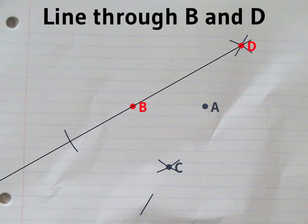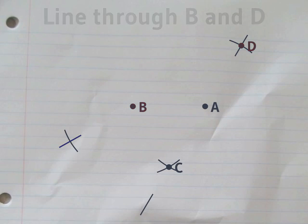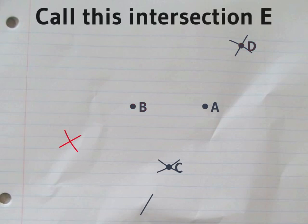Now we'll draw another straight line, this time through B and D. That meets one of the circles at E.